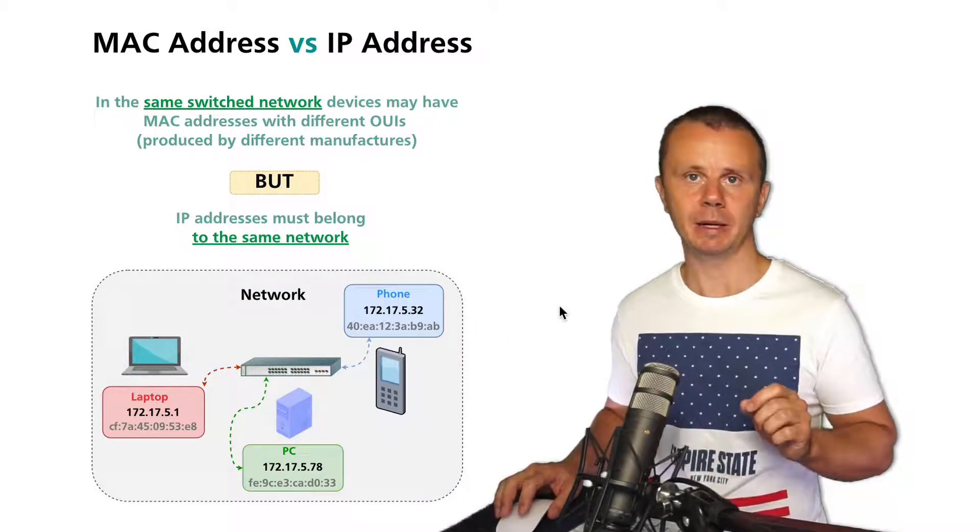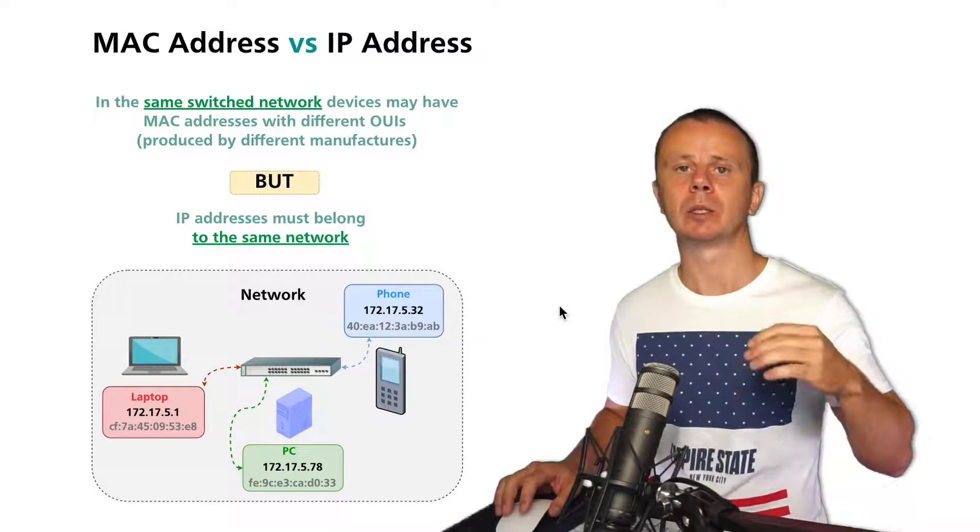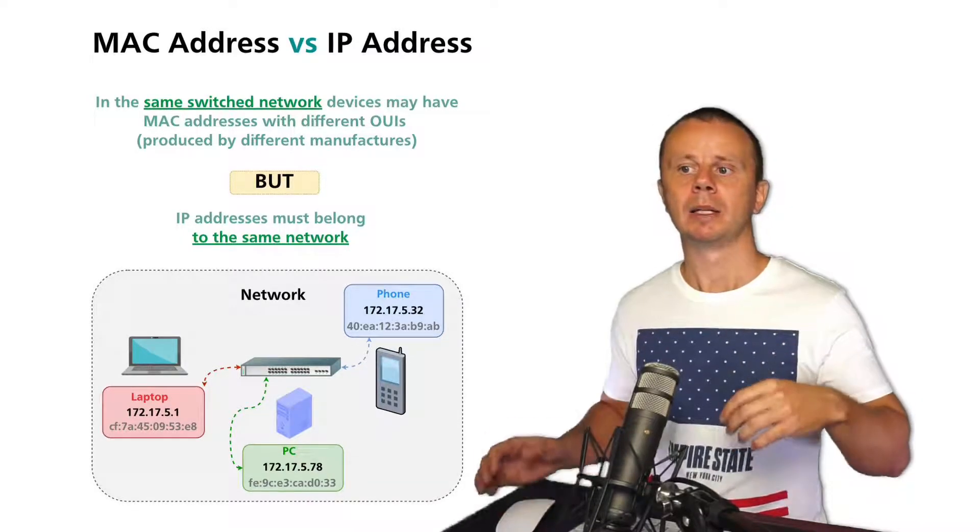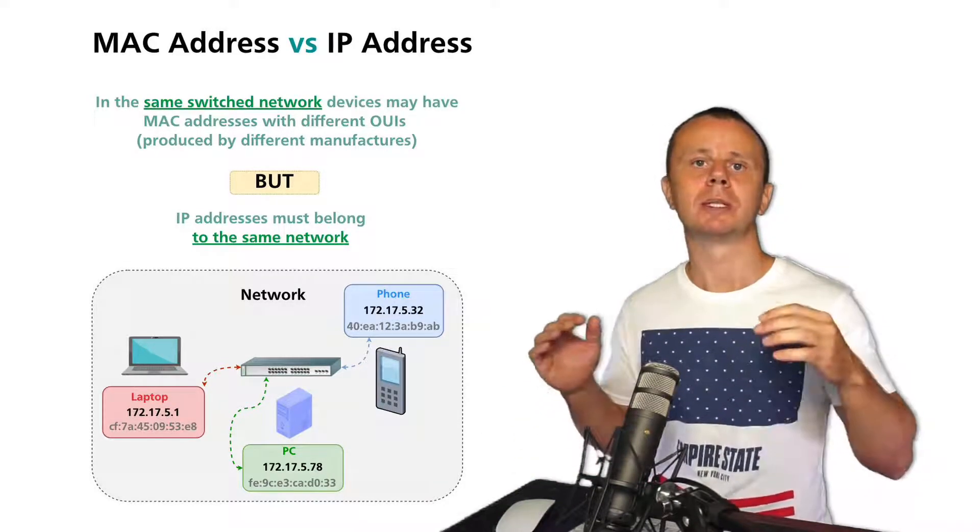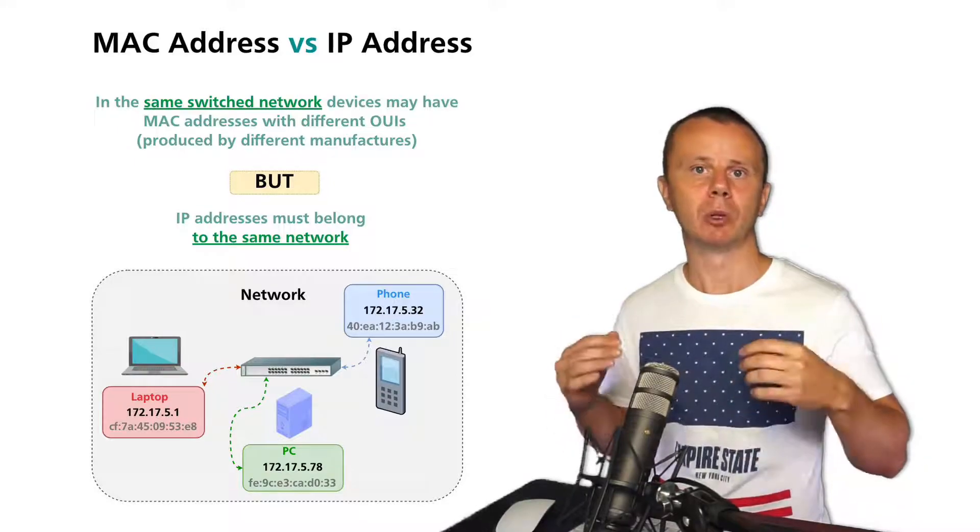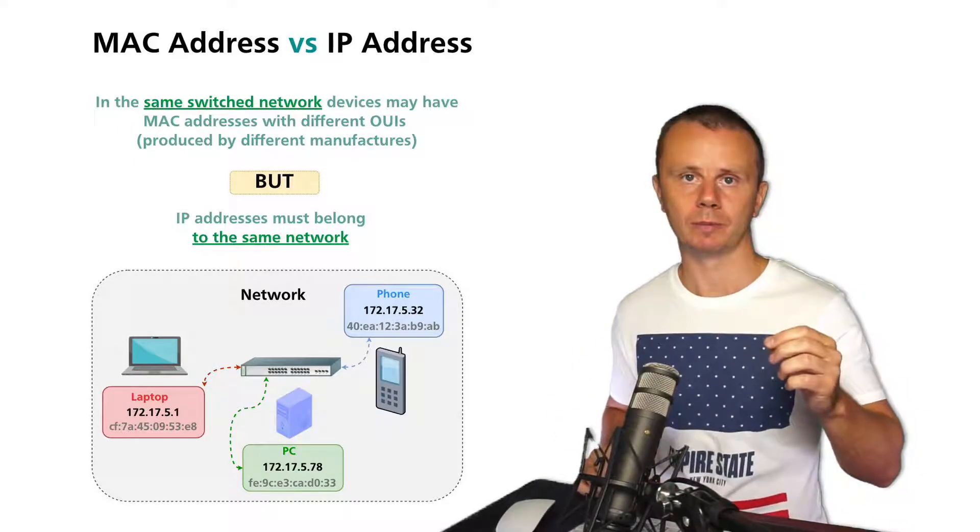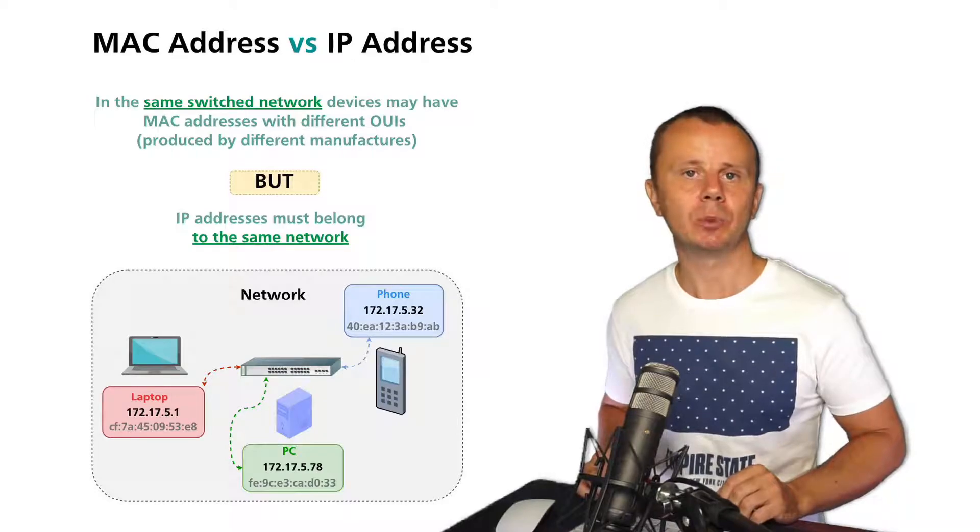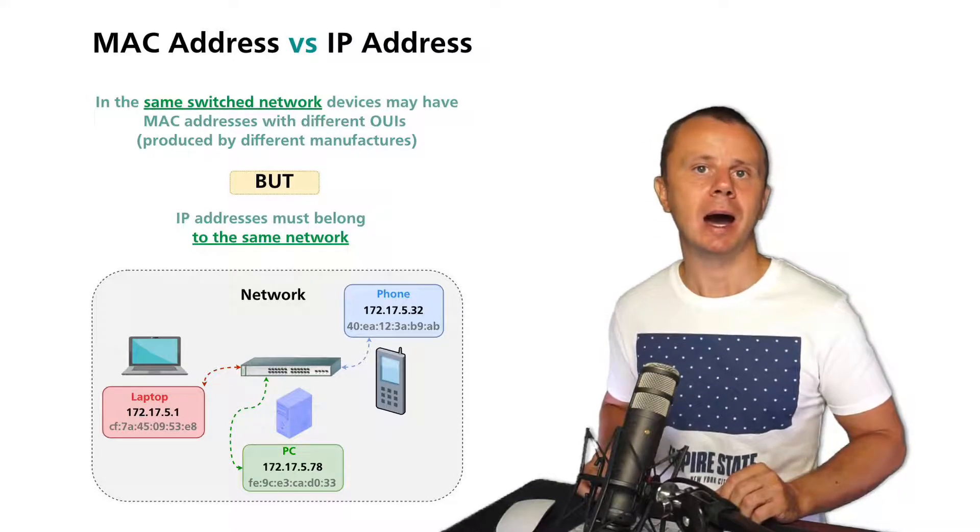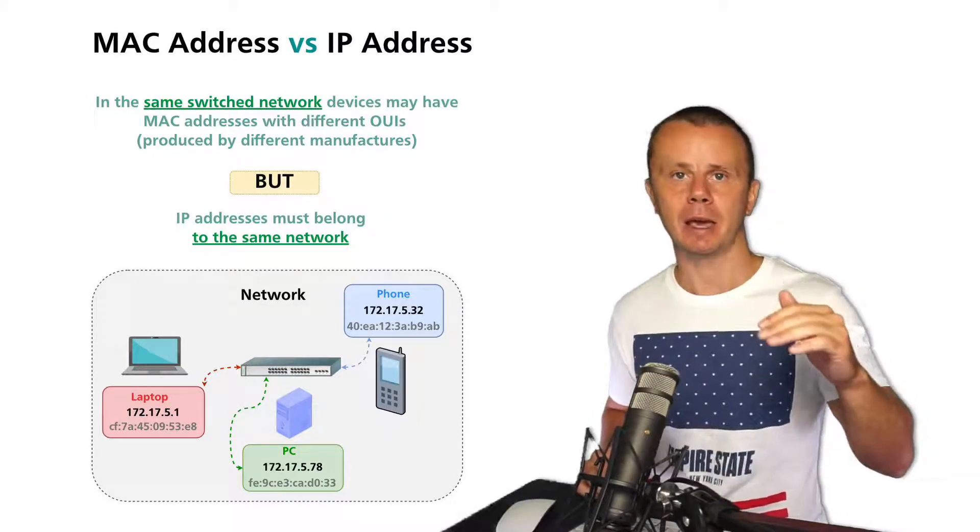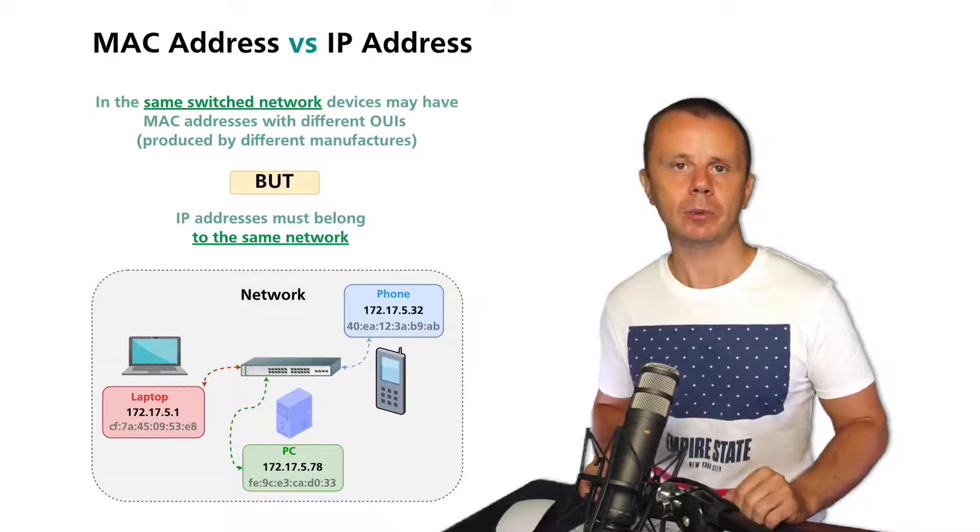That is the main idea of IP addressing on network layer. Different devices must belong to the same network if they belong to the same switched network, and the switched network is a network where different devices are interconnected on data link layer of the TCP/IP or OSI model.